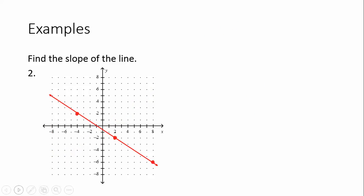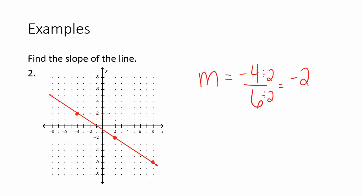In example two, there are three ordered pairs marked on the line. Starting at the ordered pair (2, -2), I count up one, two, three, four — a rise of four. I'm going left one, two, three, four, five, six — a run of six. So it's four over six. But first I recognize this line has negative slope — it's decreasing from left to right — so I put a negative sign on the fraction. Dividing top and bottom by two, I get negative two over three.